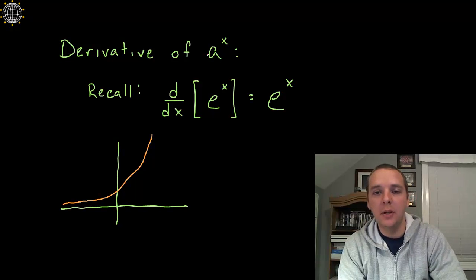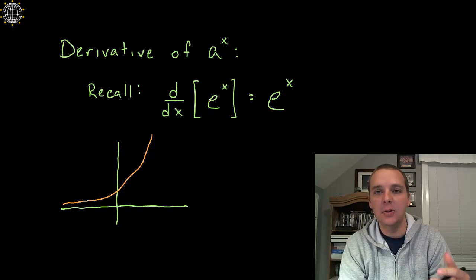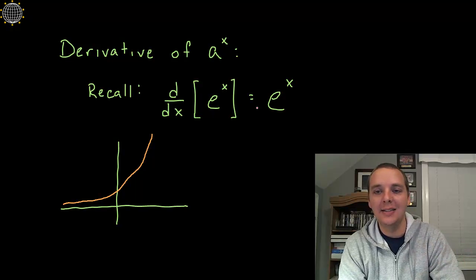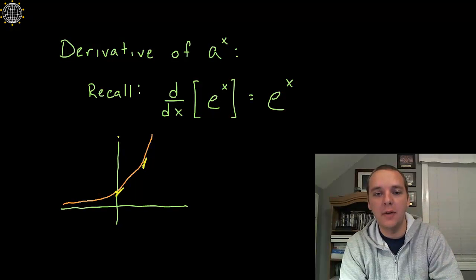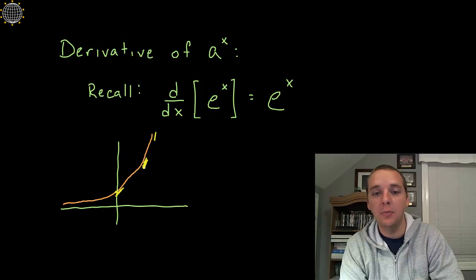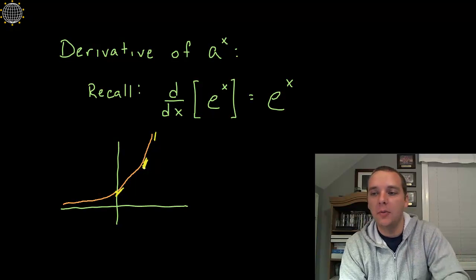Before we get into a to the x, let's remind ourselves: what is the derivative of e to the x? This was one of those great derivatives that students always love — the derivative of e to the x is itself. The special property of the graph of e to the x is that the slope at any point agrees with whatever the y value is. As the y value increases, so does the slope, in a perfect relationship.